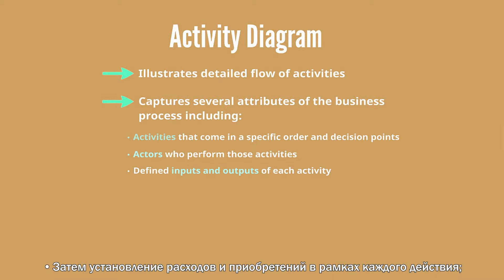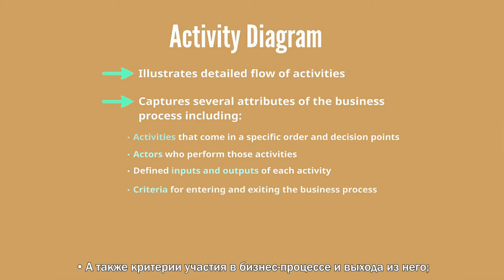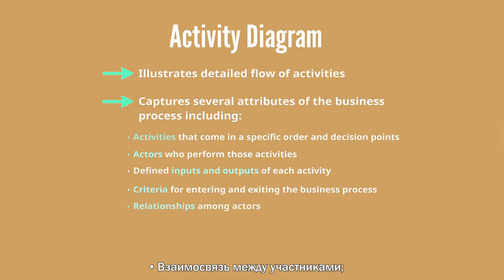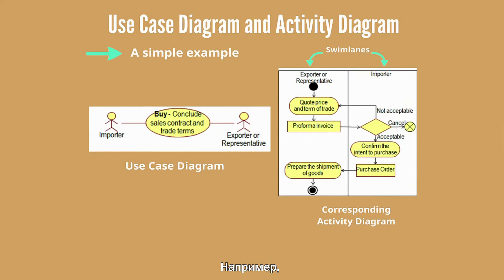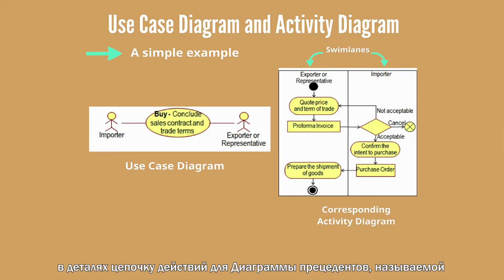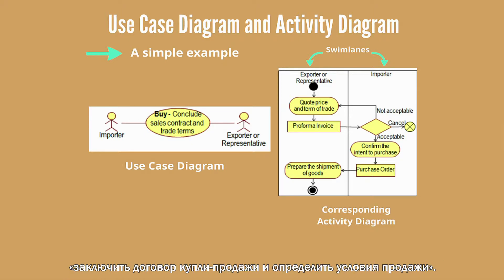Additional attributes captured include the inputs and outputs of each activity, criteria for entering and exiting the business process, relationships among actors, and information flow. For example, the activity diagram shown in this figure illustrates the detailed flow of activities for the use case of 'conclude sales contract and trade terms.'